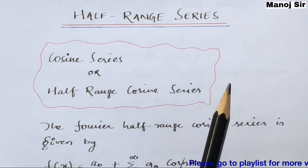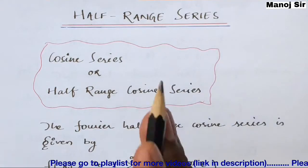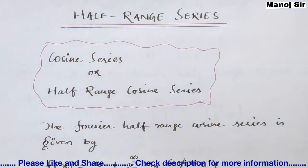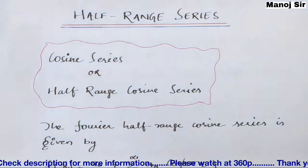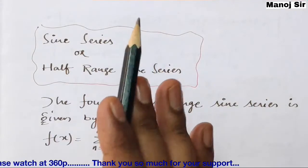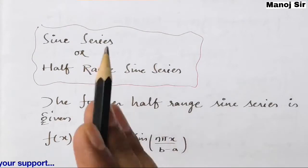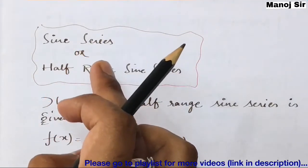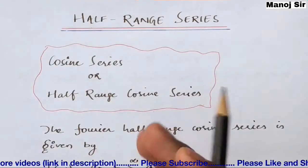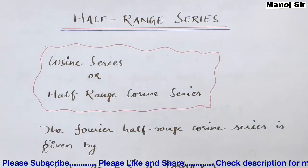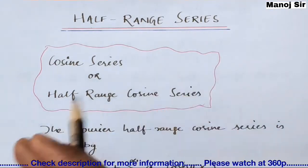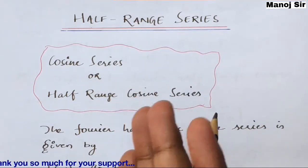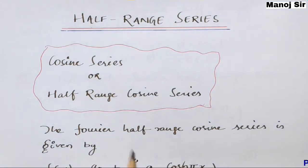Let us start with the very first topic: half range series. In a question, it may ask 'find the Fourier half range cosine series,' or simply 'find the cosine series.' Similarly, it may ask 'find the Fourier sine series' or 'find the Fourier half range sine series.' The procedure we follow for cosine-type problems is different from the procedure for sine-type problems, so we will discuss each separately.